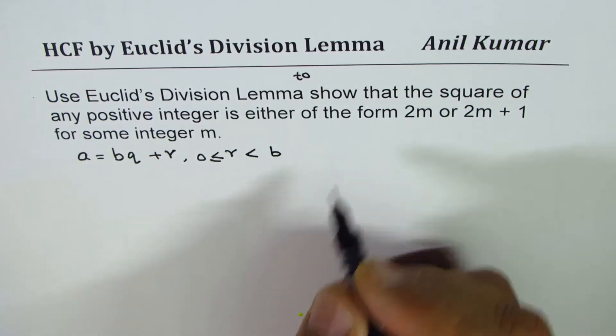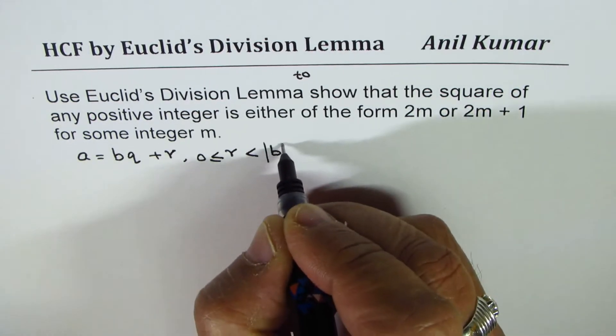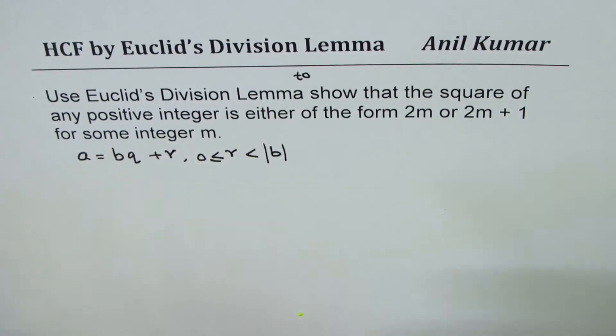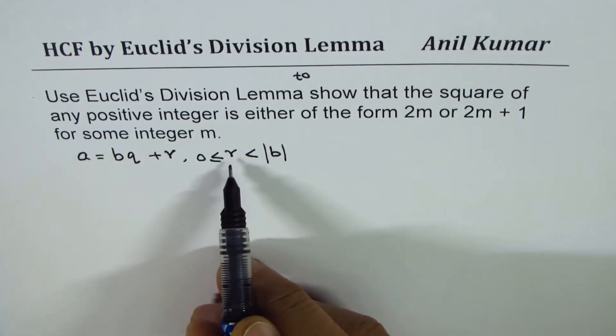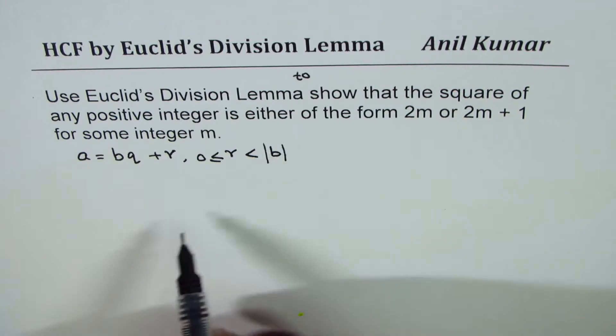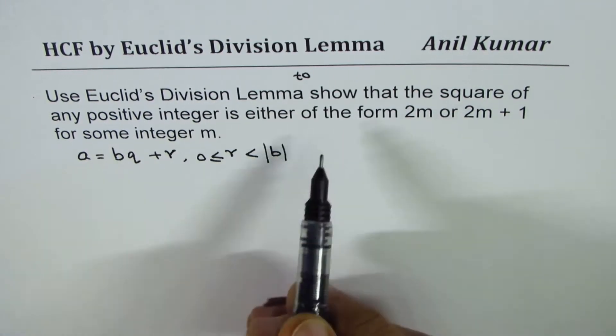Let me write b for the time being. We should write absolute value of b. It has to be a positive number. If r is greater than 0, it is less than some positive number b.